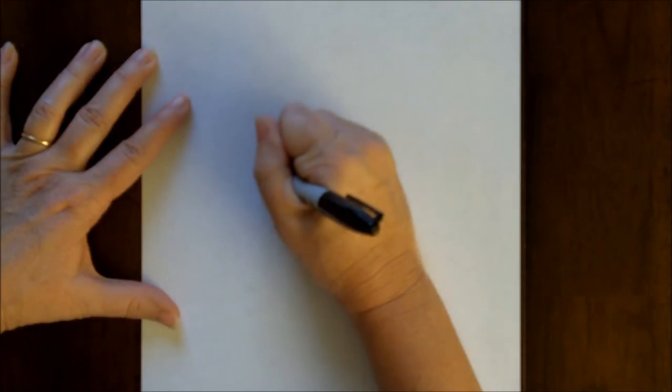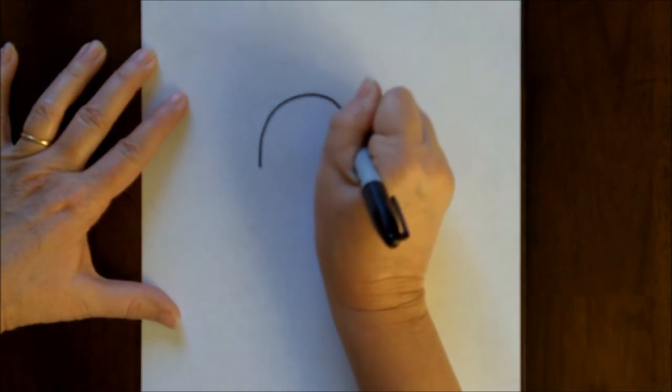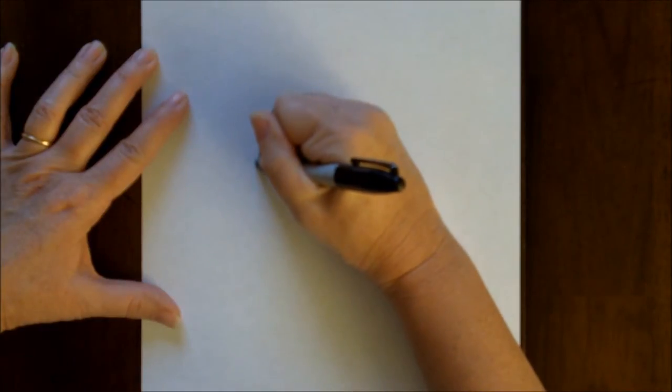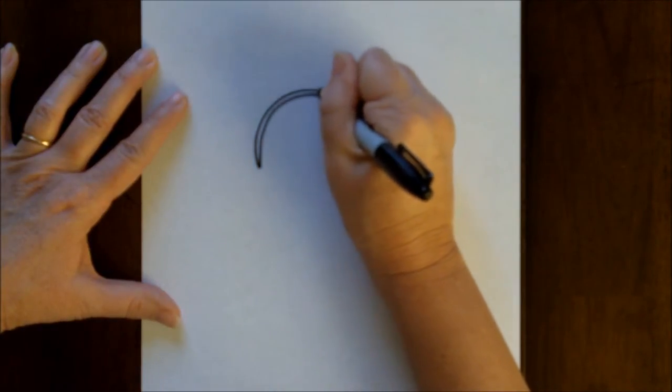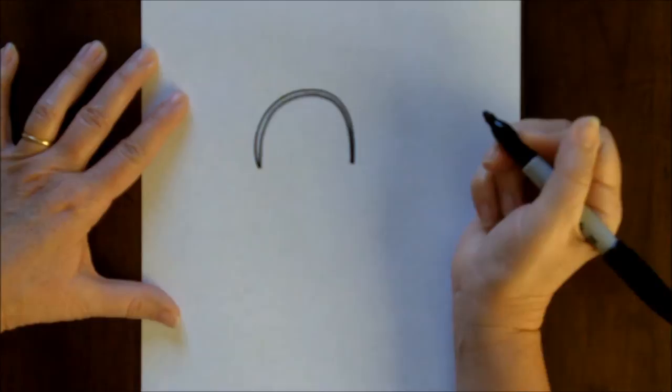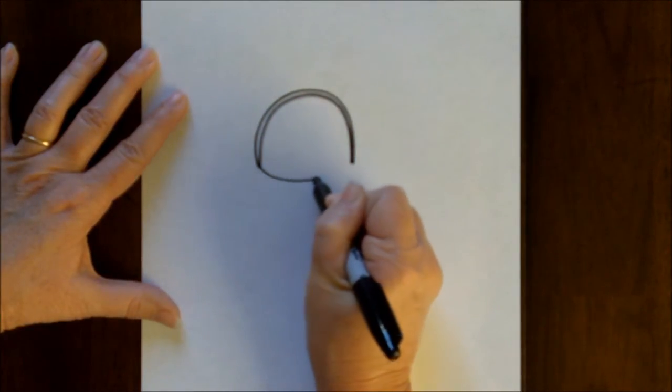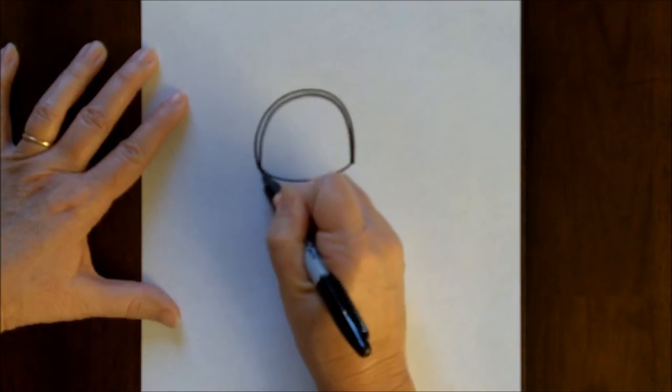We're going to start out with an upside-down U, just like that, and then we're going to double that U. Now we are going to close up that U with a curved line and double that as well.